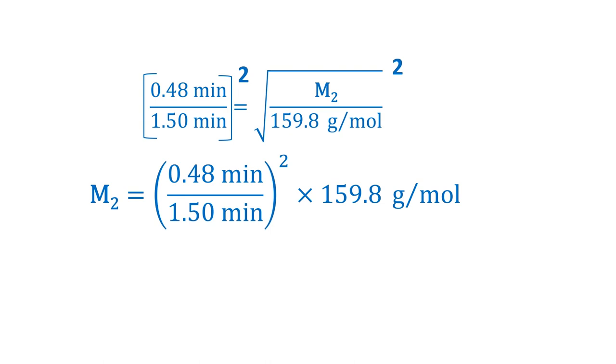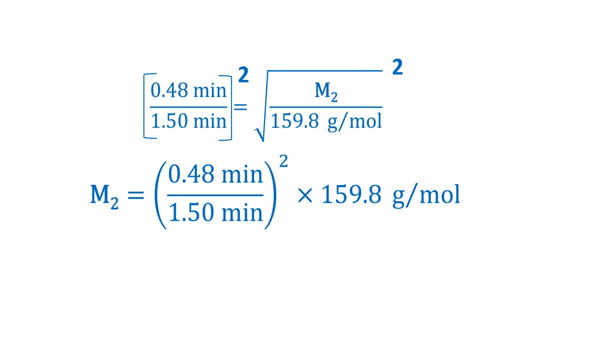The unknown is inside a square root, so we'll have to square both sides, then multiply the bromine mass to get the mass of the unknown by itself. Solving this gives us a molar mass of 16 grams per mole to two significant figures. Methane is the likely unknown since its molar mass is 16.05 grams per mole.